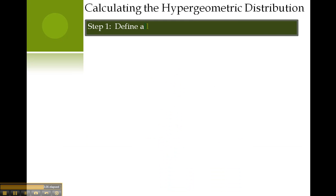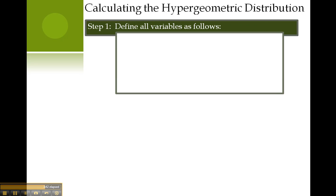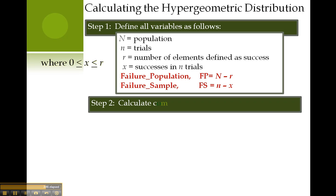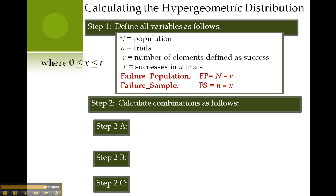Calculating the hypergeometric distribution. Step one, define all variables as follows. Capital N equals the population. Lowercase n equals trials. R equals the number of elements within the entire population that can be defined as success. x equals the successes within the trials. Additional variables: fp is the failure population. So, fp equals the population minus the successes contained within the population. The failure sample equals the trials minus the successes within the trials.